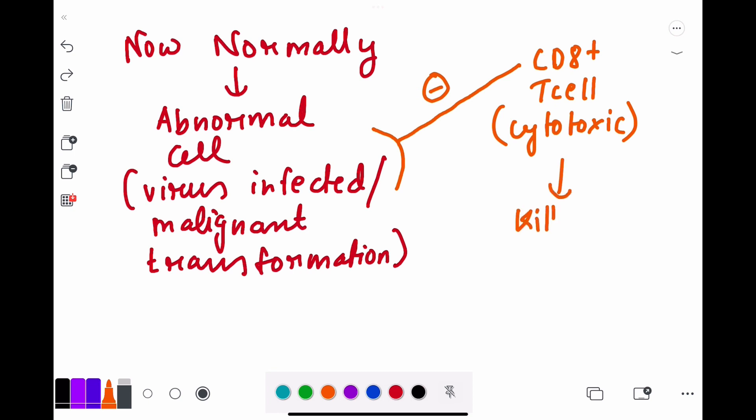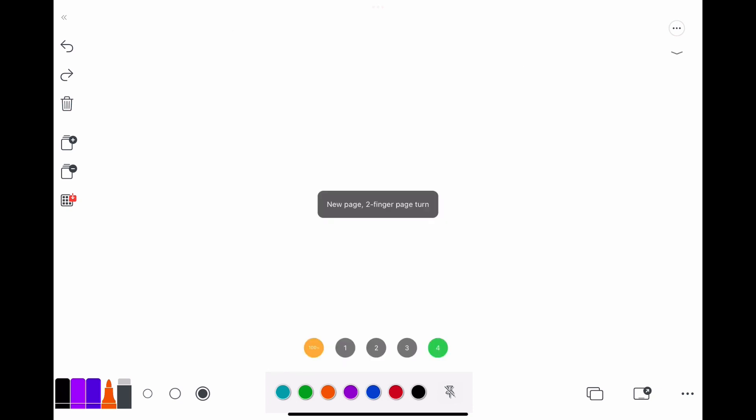If there's any abnormality, the CD8 cytotoxic T cell will kill them. It will bind to that MHC1 and interact with it. There is a complex mechanism, I don't remember exactly, but that is what happens.